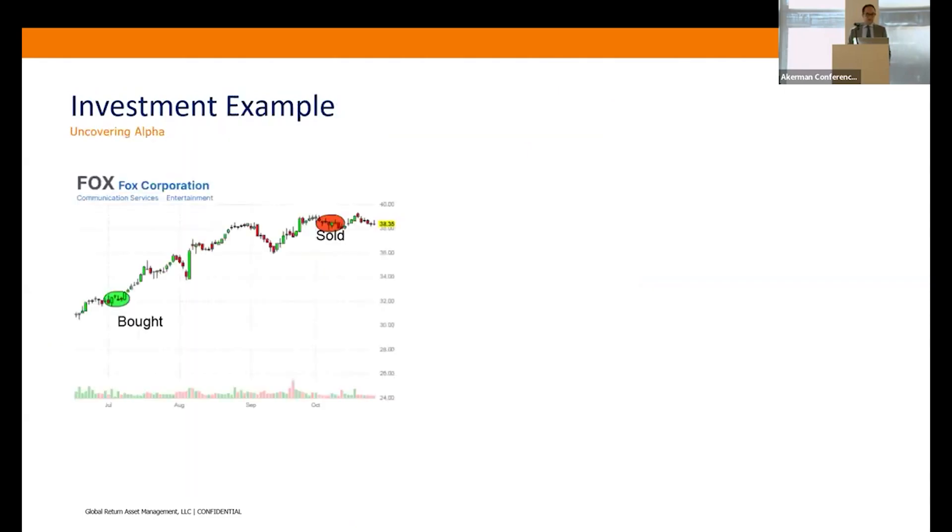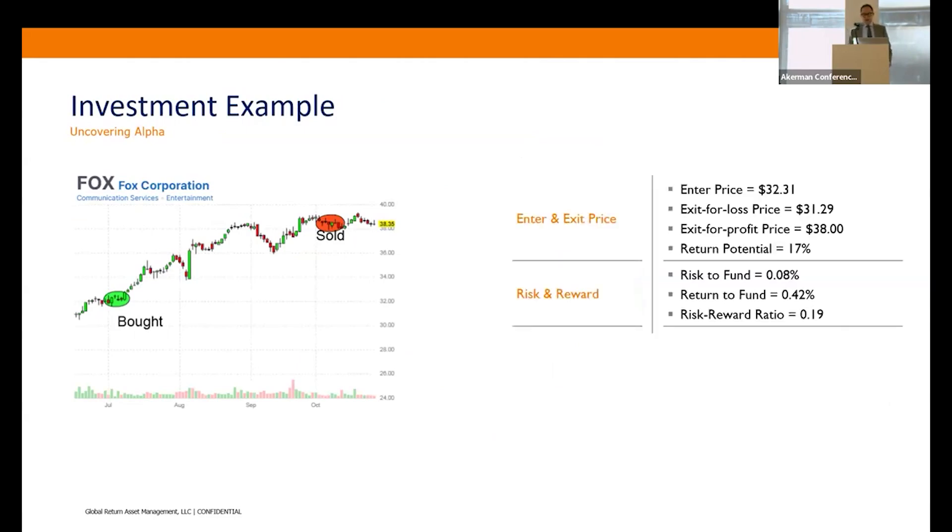Here's an investment example—we're all familiar, Box Corporation. In July we bought the stock. The algo recommended an entry price of $32.31. We were going to exit for a loss at $31.29, and the target price is $38 for a 17% return. Risk reward—how we look at investment opportunities at Global Return is a risk reward ratio. So if we took a loss on this investment, the risk to the fund is 8 basis points. If we achieved our investment return, we would have added 42 basis points to the fund, and that's a risk reward ratio of 19.